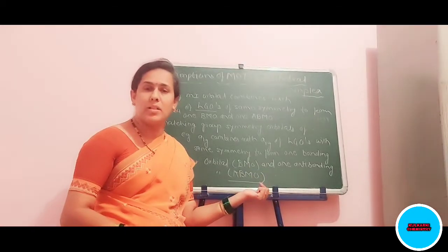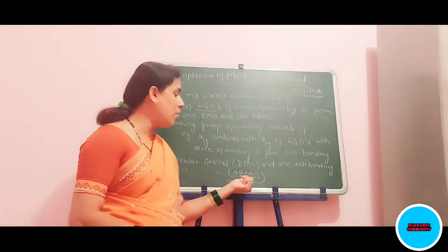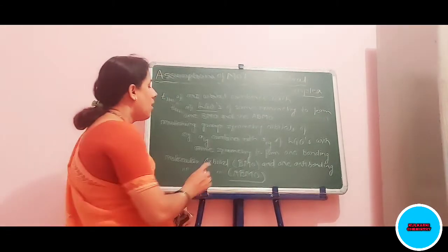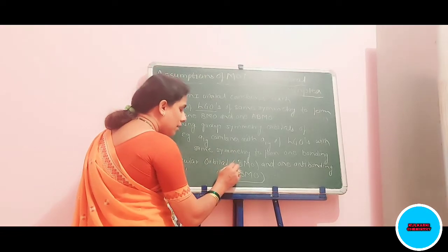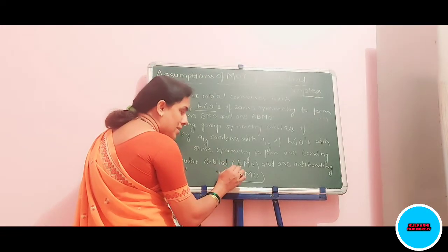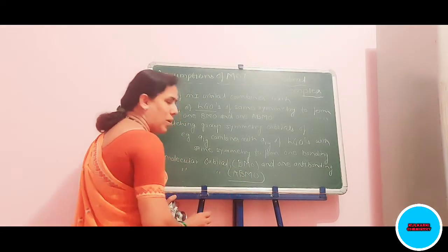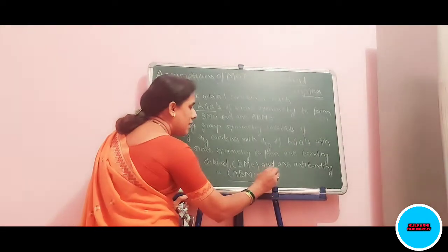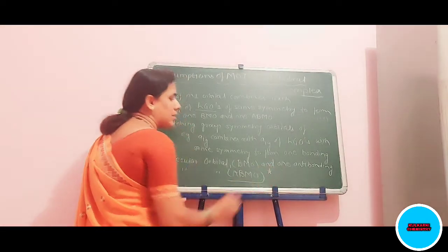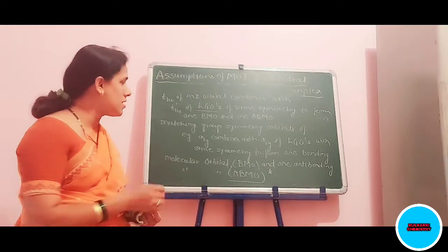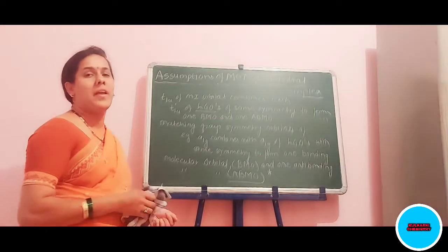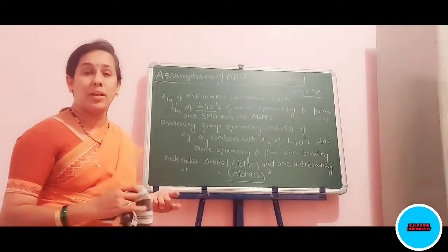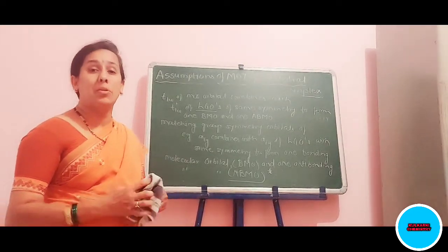The bonding molecular orbital possesses lower energy, while the anti-bonding molecular orbital possesses higher energy. The anti-bonding molecular orbital can be represented by using a dash over the orbital symbol or a star mark. The last assumption is related to the T2G orbital — these are the non-bonding sigma orbitals.